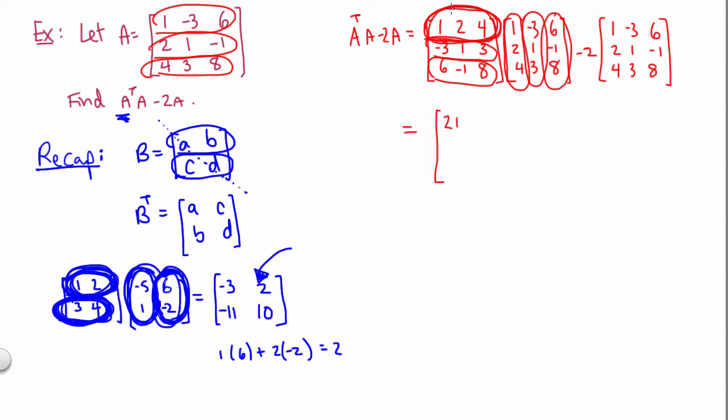And then sticking with this first row and now doing the dot product with the second column, we've got minus 3 plus 2 plus 12. So that gives us 11. And then first row dotted with the third column, 6 minus 2 plus 32. So that sounds like 36. So there we go. That's our top row completed.